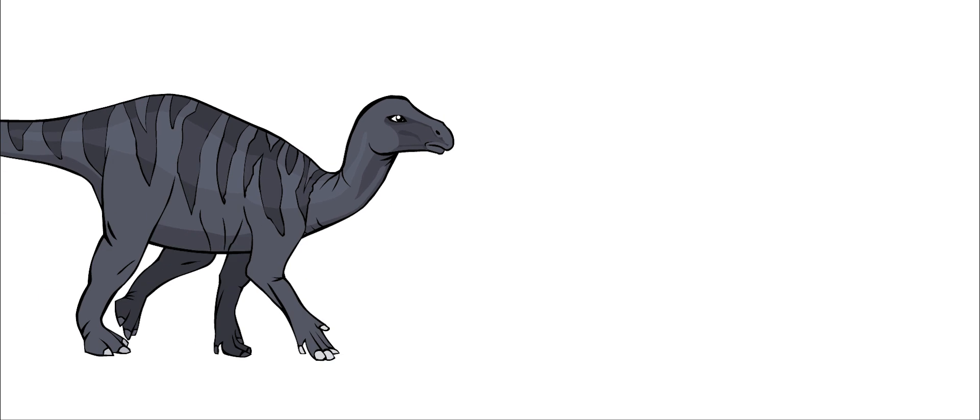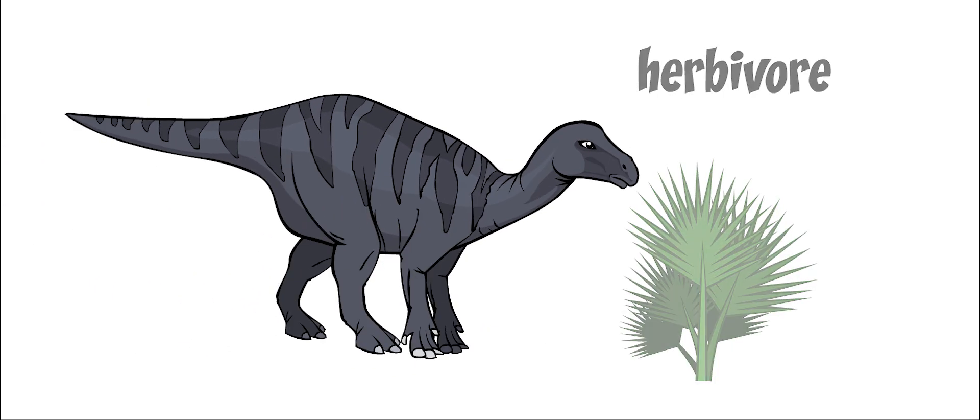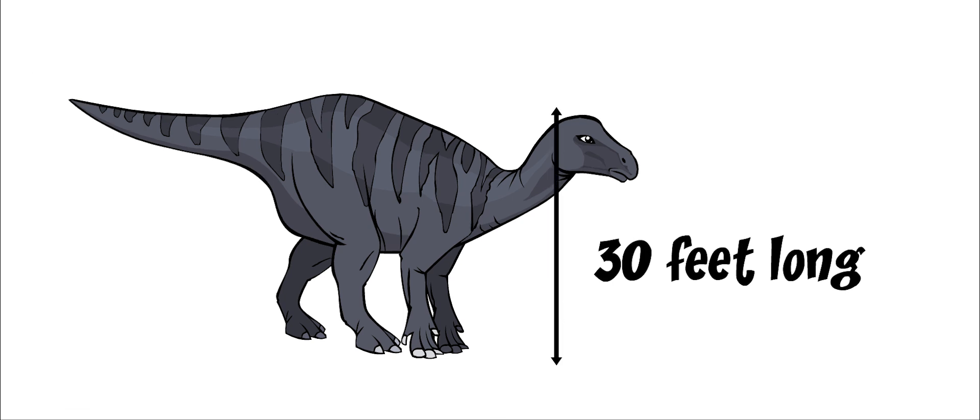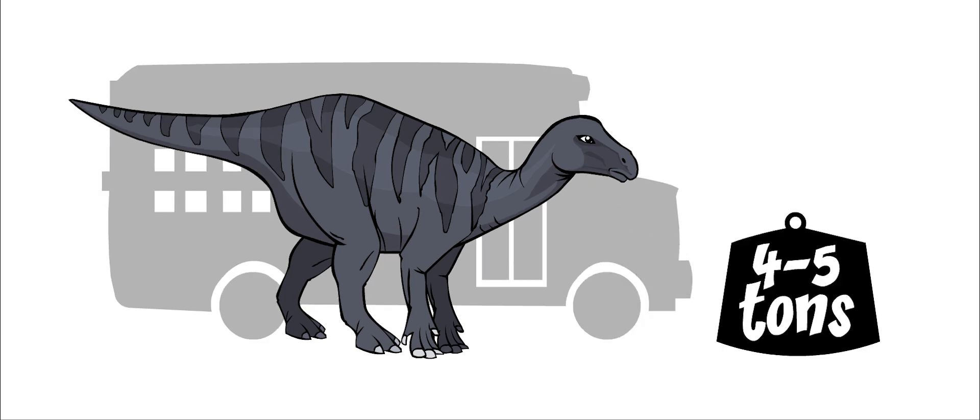Iguanodon was a big herbivore, meaning that it only ate plants. It grew to be about 30 feet long and 16 feet tall. That is about the size of a school bus. It might have weighed four to five tons.